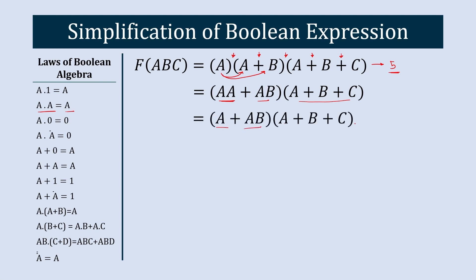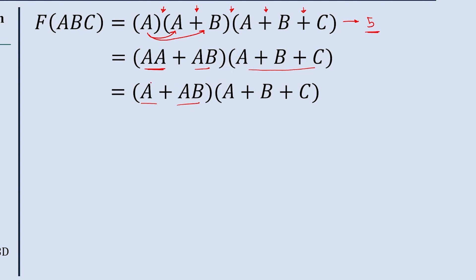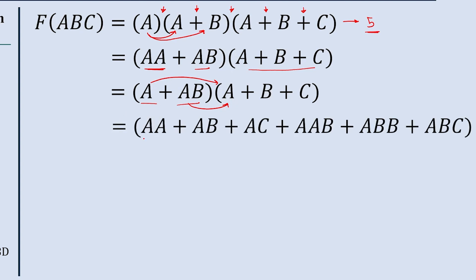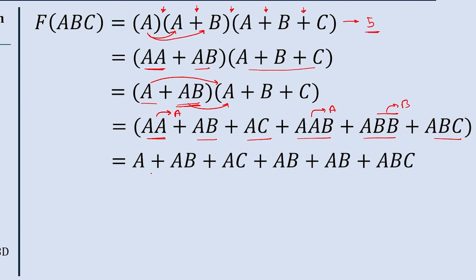Now we are going to multiply these two terms. First we multiply A with A plus B plus C, giving A·A, A·B, and A·C. Then we multiply AB with all three terms, giving AAB, ABB, and ABC. Here A·A results into A, this A·A also results into A, and B·B results into B. So the equation becomes: A plus A·B plus AC plus AB plus AB plus ABC.